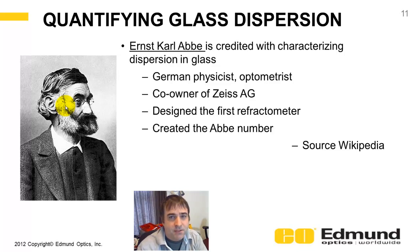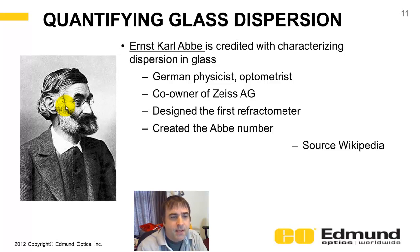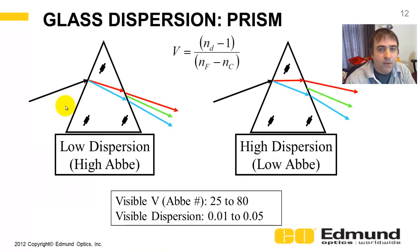Quantifying glass dispersion — putting numbers to dispersion. It was a German, Ernst Karl Abbe, who is credited with characterizing and measuring dispersion in glass. He designed the first refractometer and created the Abbe number. He also ran in the same circles as Schott and Zeiss, and was co-owner of Zeiss.